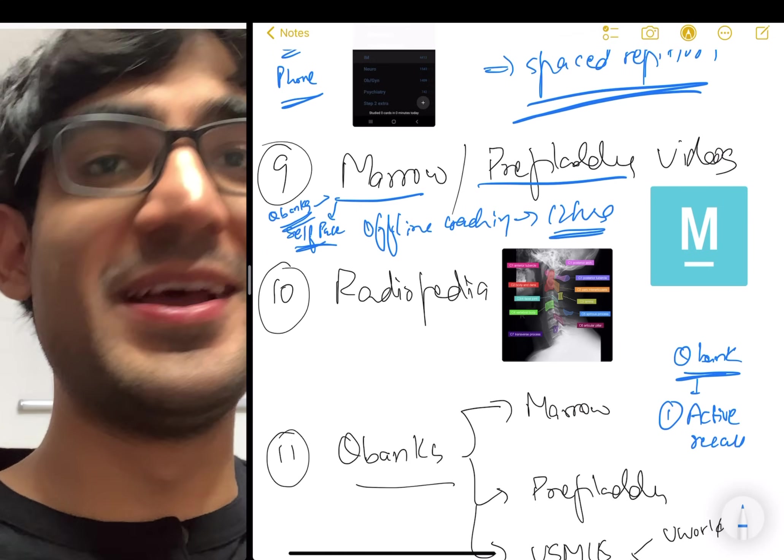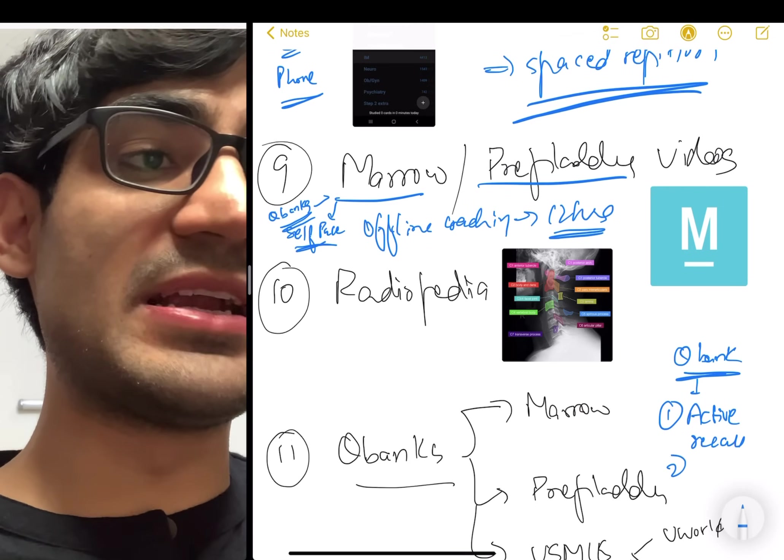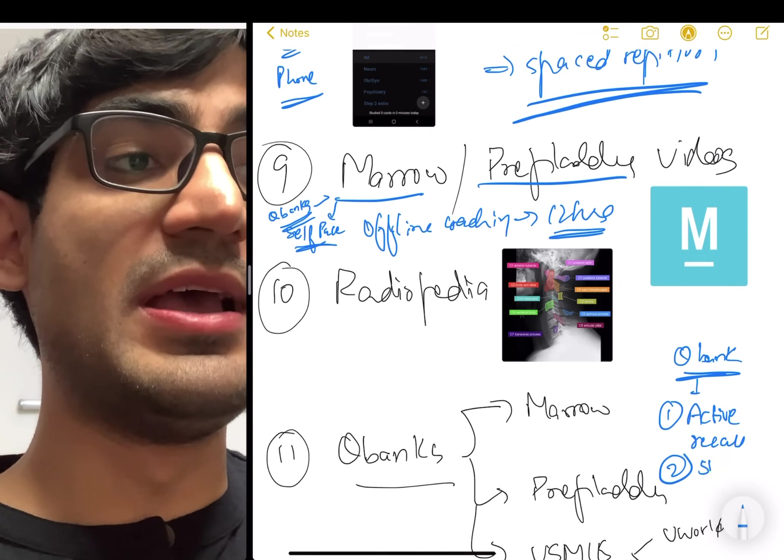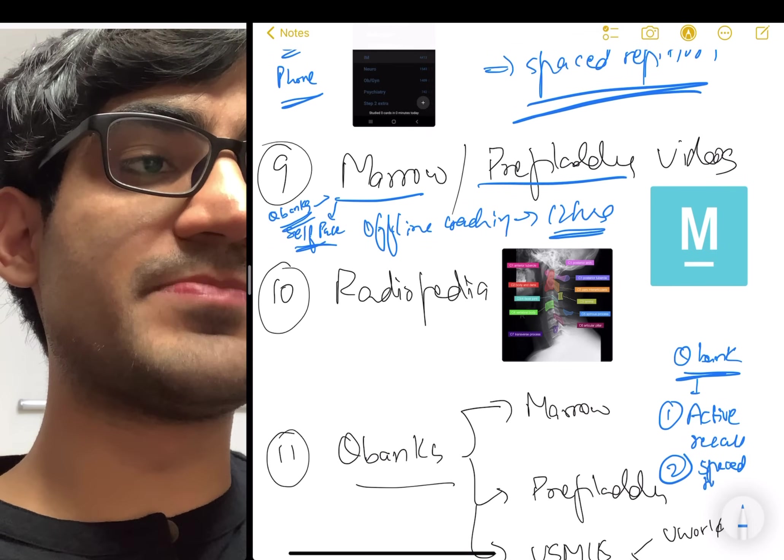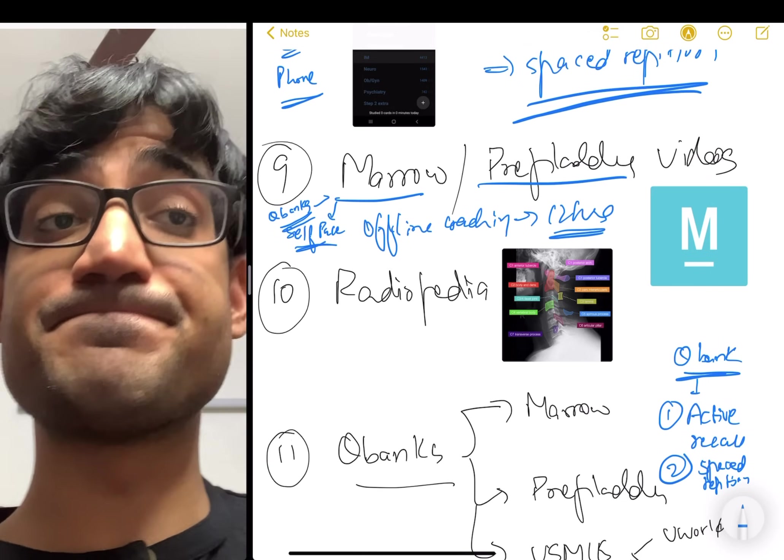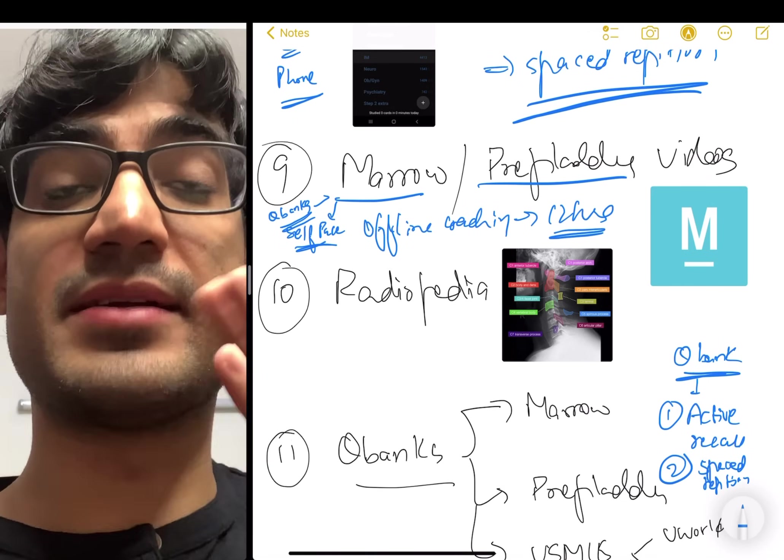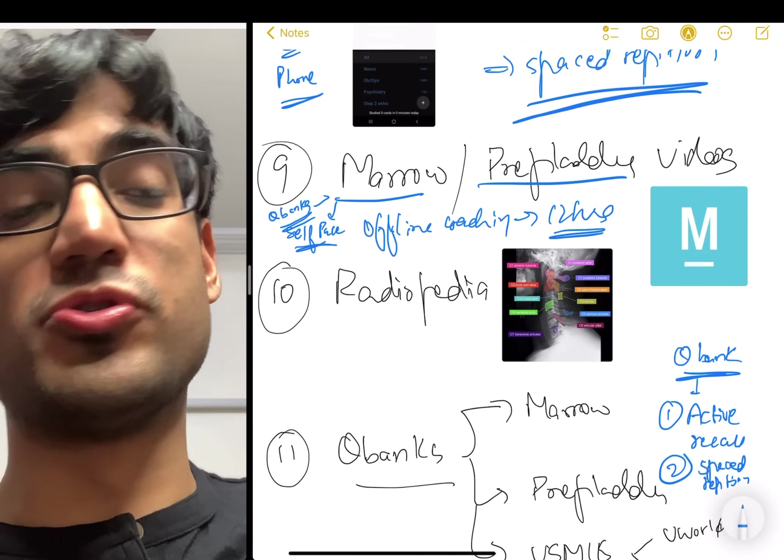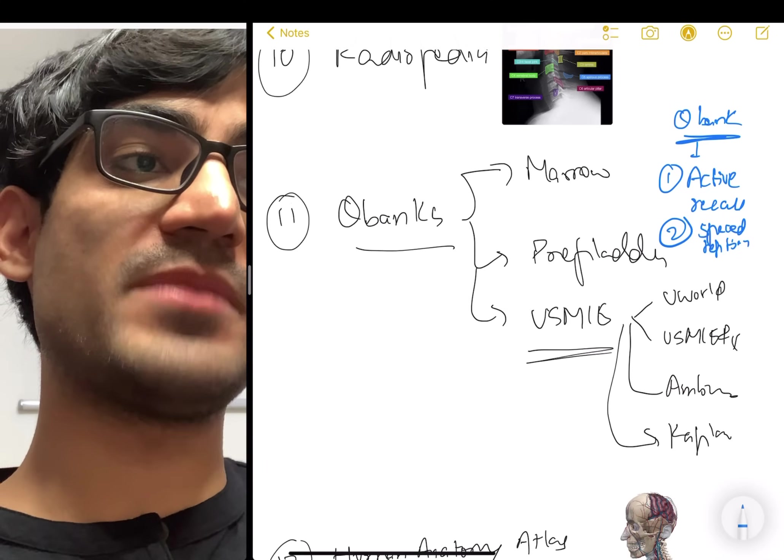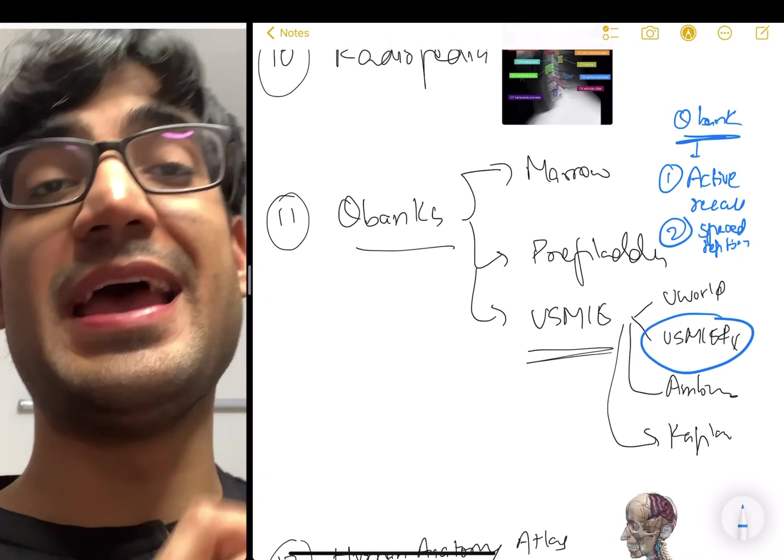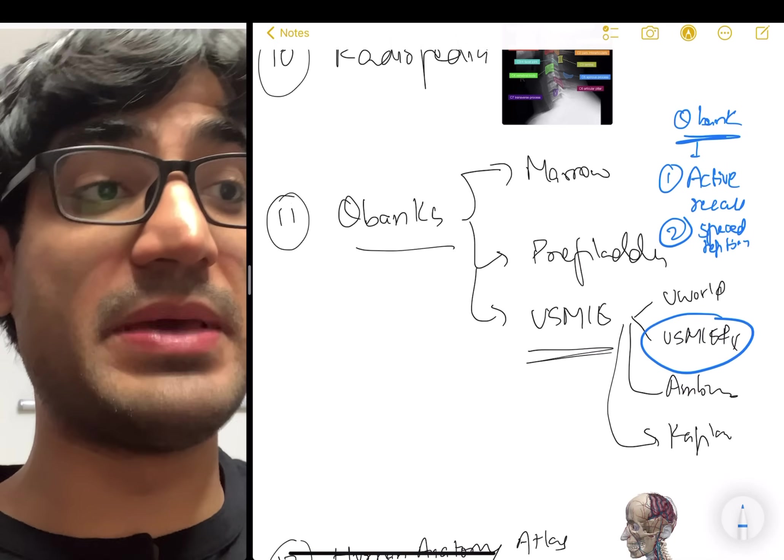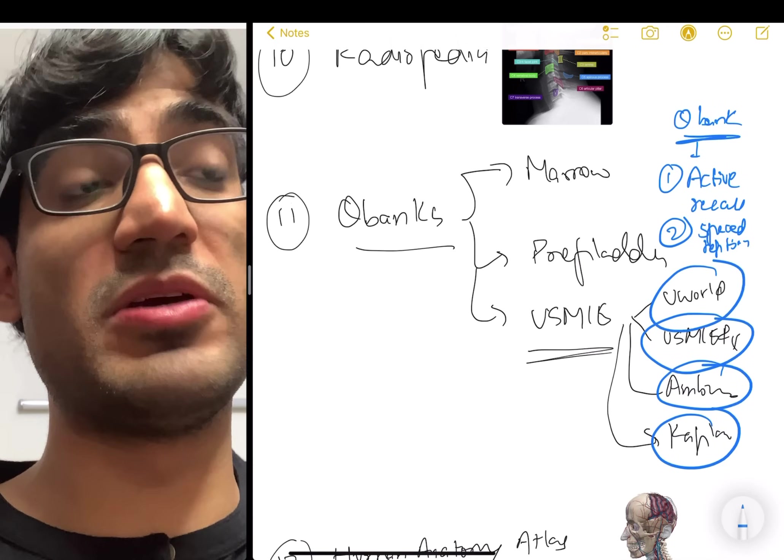So for every subject, Marrow and Prep Ladder have their question banks and you can do them. The second thing question banks stimulate is spaced repetition. And the way that works is because you're going to see similar concepts across multiple question banks. So let's say I did the Marrow question bank, right? Then maybe I can do a question bank that is USMLE Rx. So there are question banks for USMLE, USMLE Rx. And you're going to see similar concepts from Marrow being tested on USMLE Rx, maybe on Amboss, maybe on Kaplan question bank, maybe on UWorld.